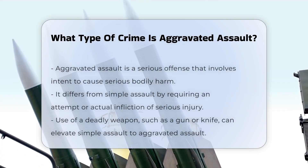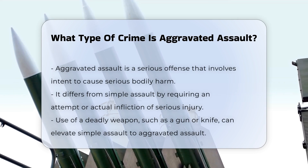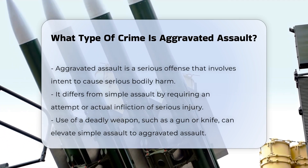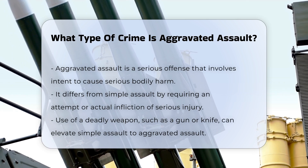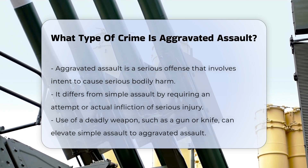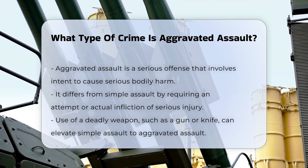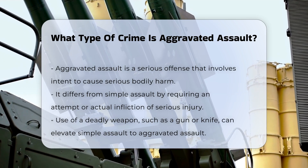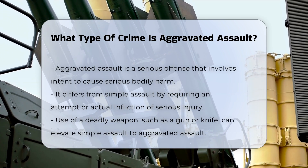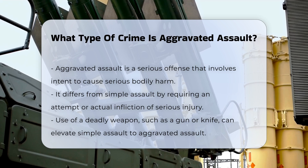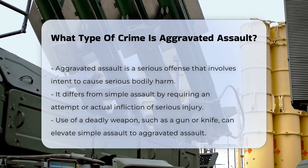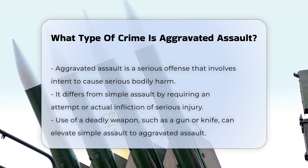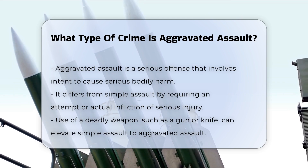Aggravated assault is a serious offense that involves specific elements that distinguish it from simpler forms of assault. It is characterized by the intent to cause serious bodily harm to another person or the actual infliction of such harm. In most jurisdictions, aggravated assault requires that the defendant attempt to cause, or actually cause, serious bodily injury to another person.